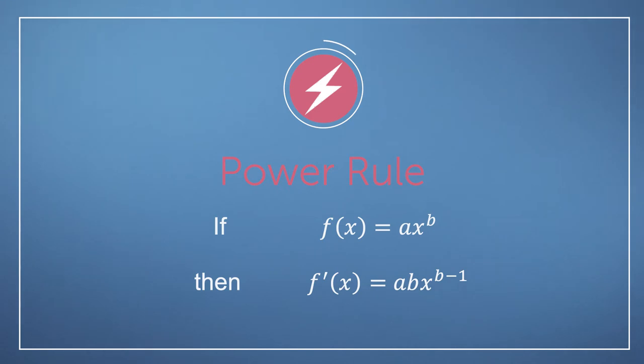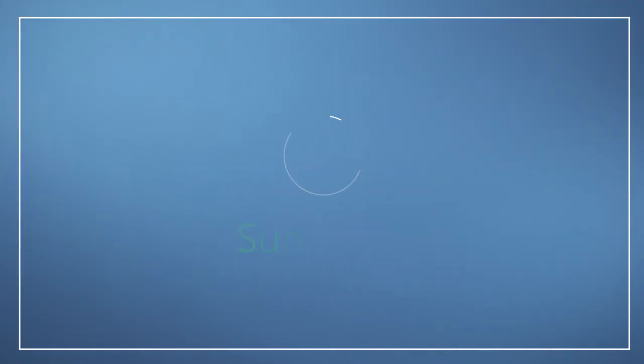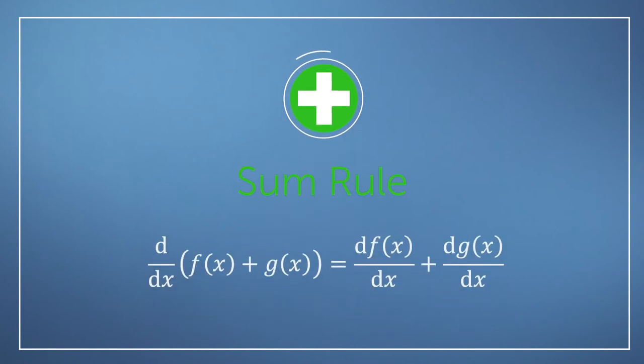So, the original power gets multiplied to the front, and then the new power is just one less than it was before. This is known as the power rule, and you can put this into your calculus toolbox along with the sum rule that we saw earlier.